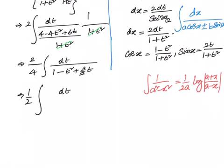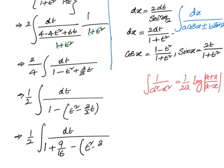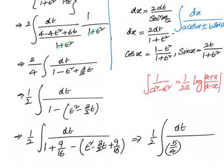We will write down dt divided by 1 minus of t square minus 3 by 2t. You can see that this is like a square minus 2ab, so we need to add b square. We have b equal to 3 by 4, so we add plus 9 by 16. We can write down the integral of dt divided by 1 plus 9 by 16 minus t square minus 3 by 2t plus 9 by 16, which equals 1 by 2 integral of dt divided by 5 by 4 whole square minus t minus 3 by 4 whole square.